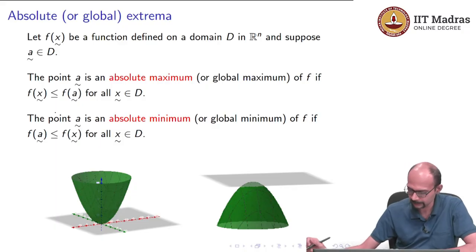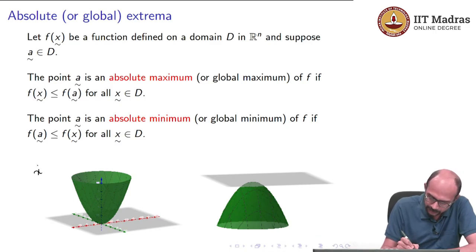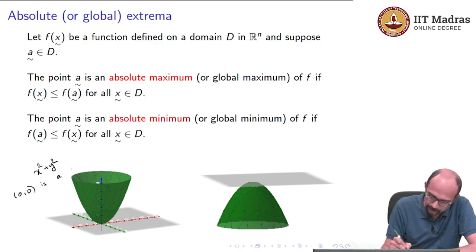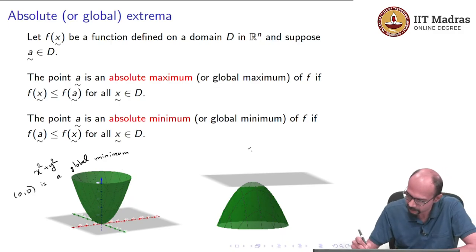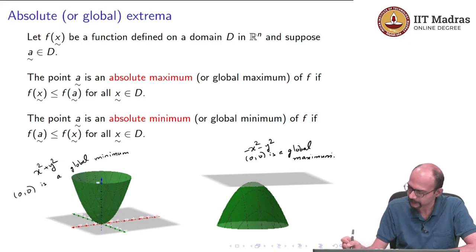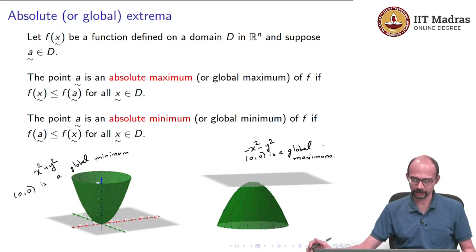Here are two prototypes: the function x² + y² has a global minimum at (0, 0), and the function −x² − y² has a global maximum at (0, 0). This is clear because squares are always positive.